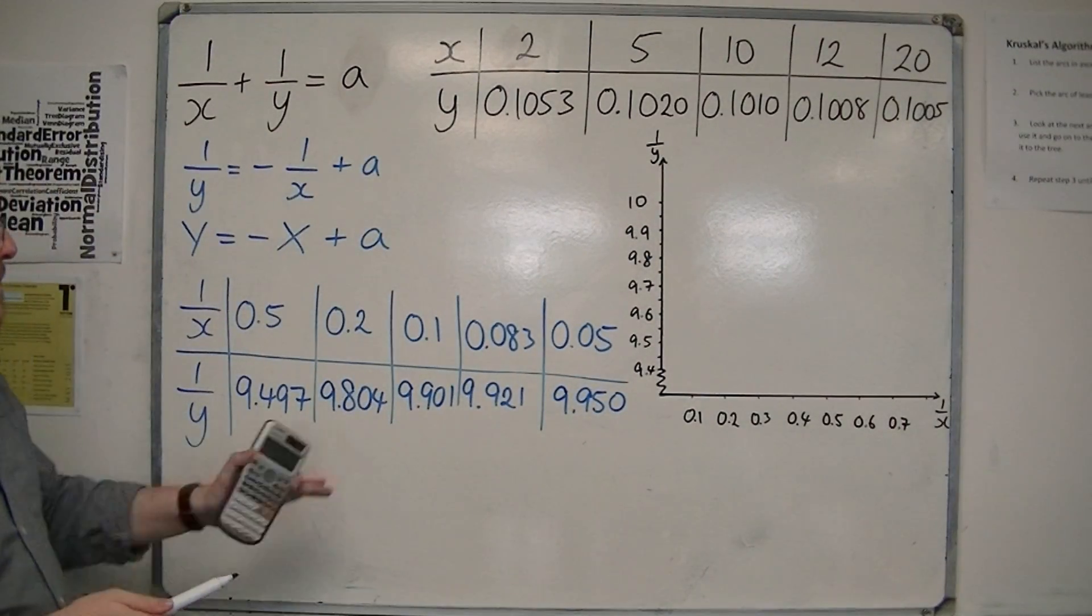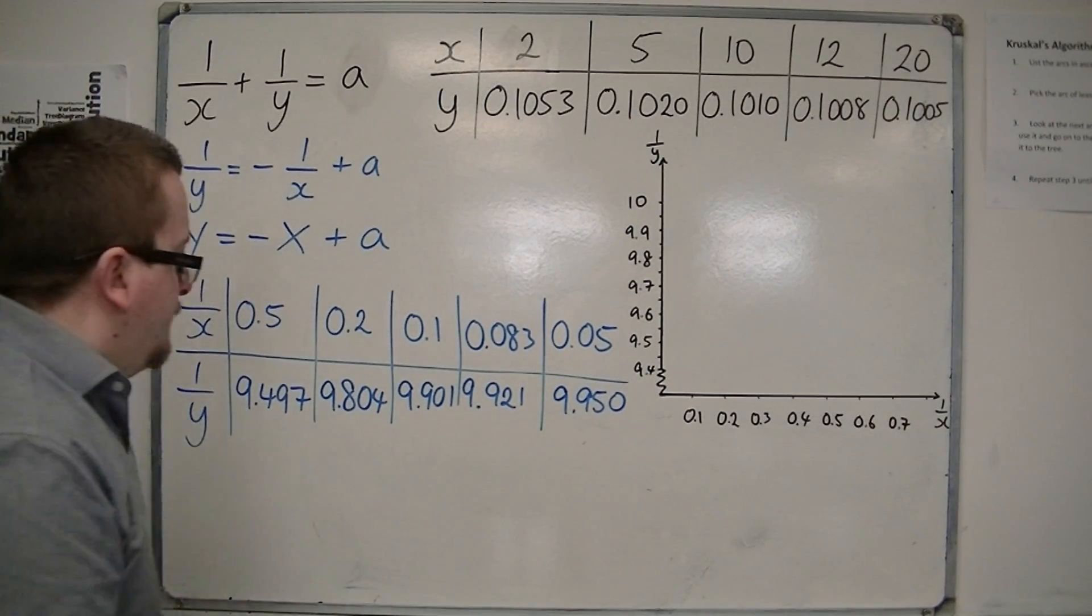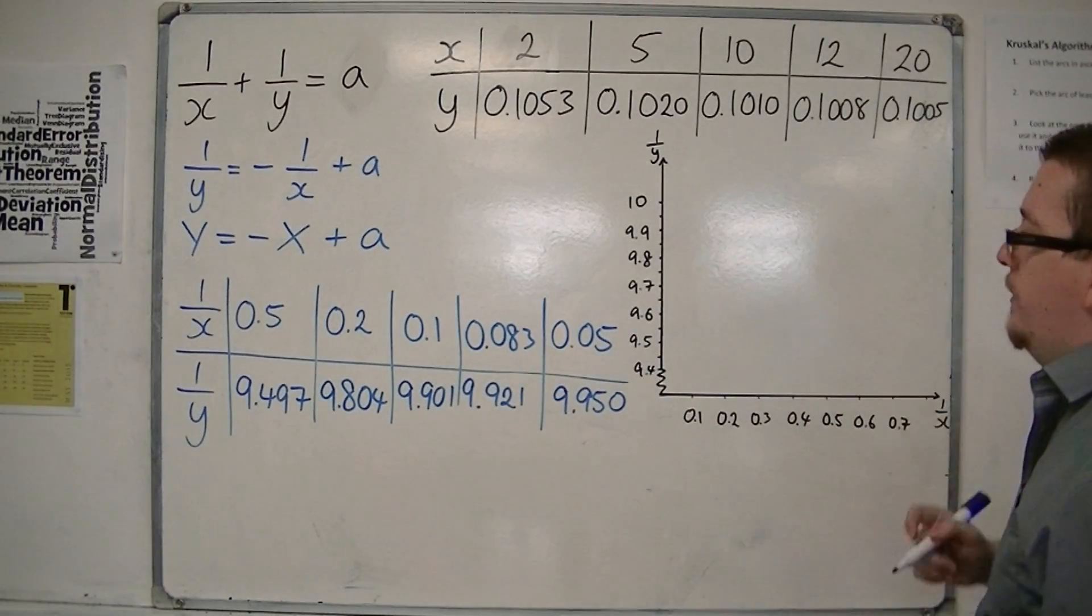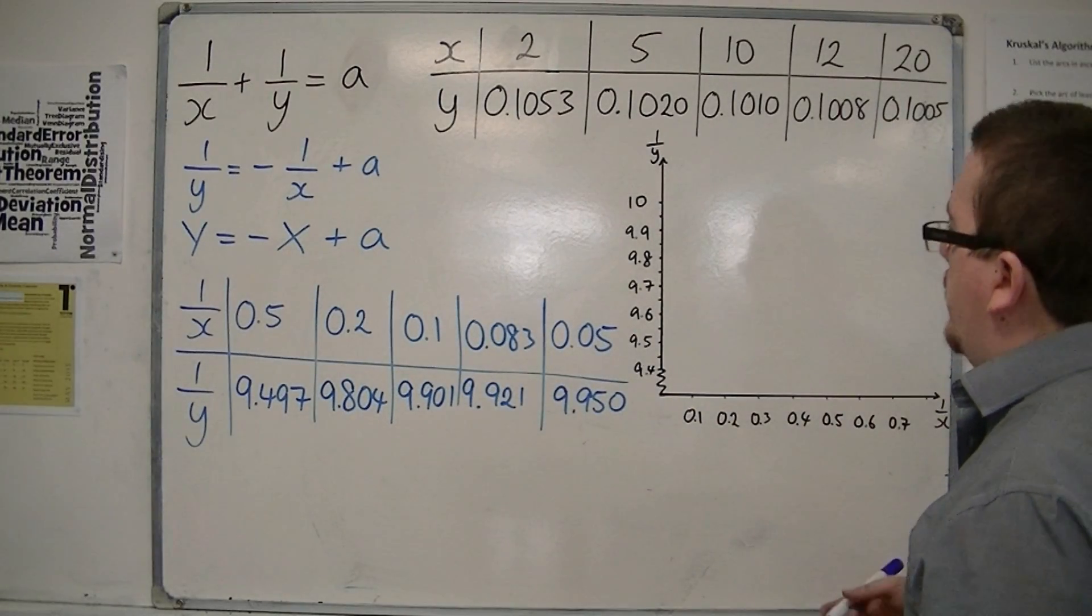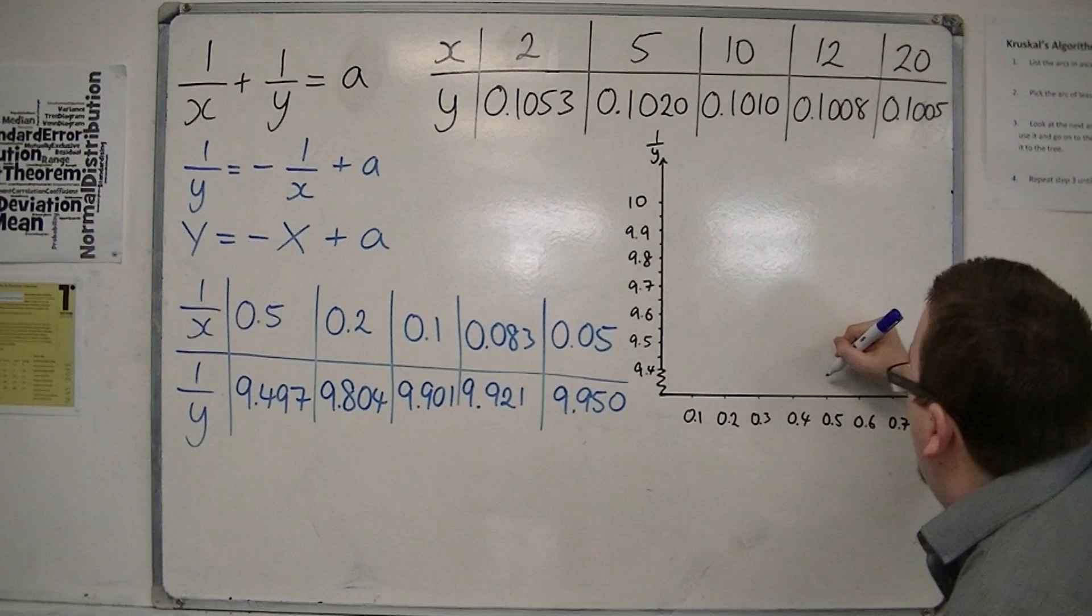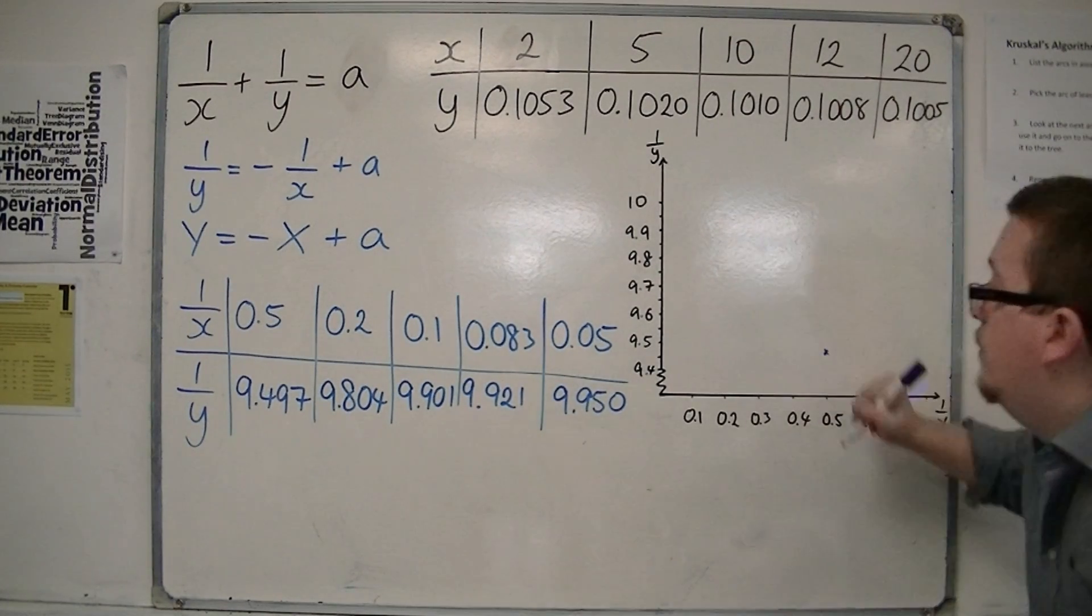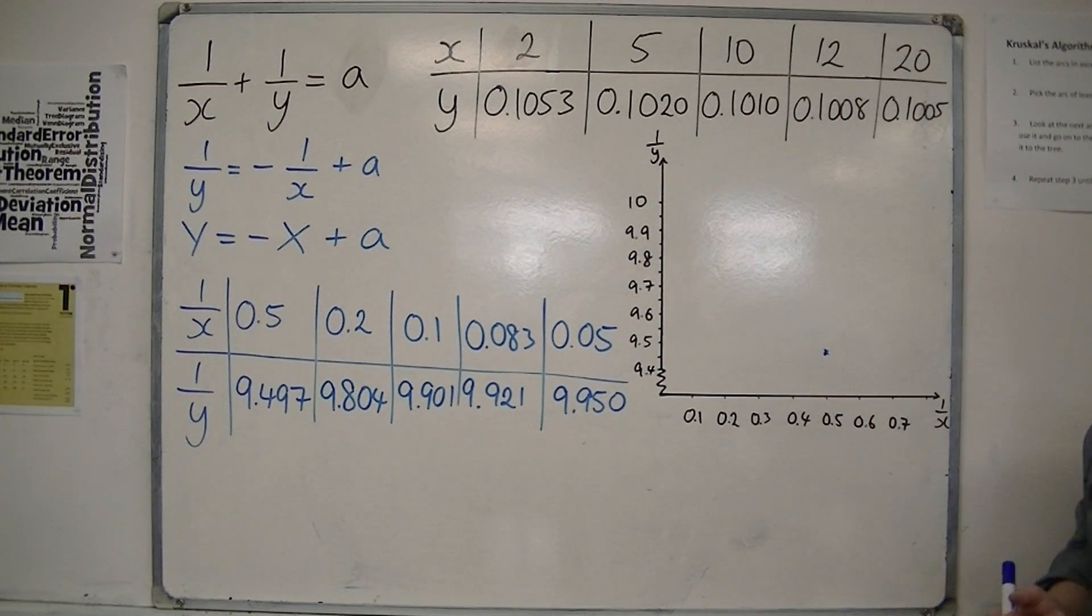So then I would plot this data. So we have 0.5, 9.497. So 0.5, 9.497 is roughly there. Obviously, if you had a nice, accurate graph, this would be a lot better.